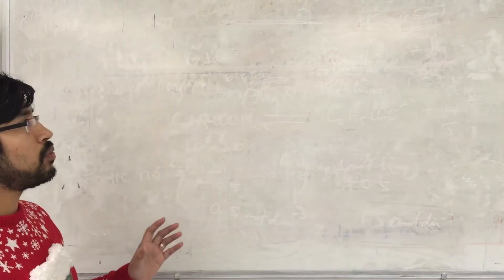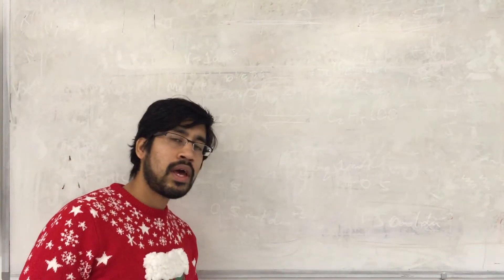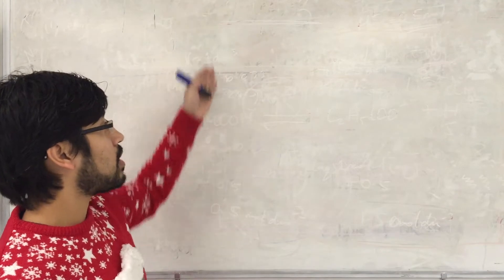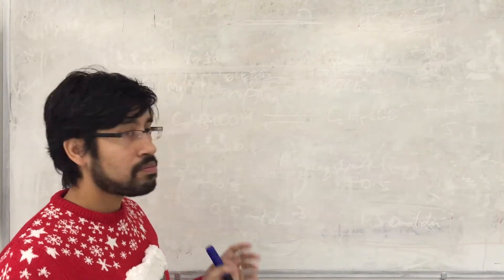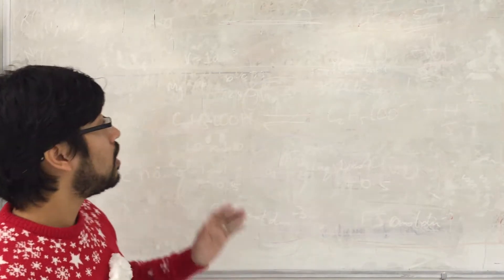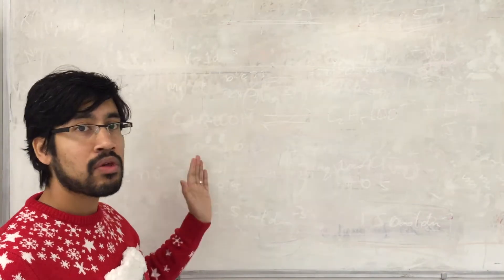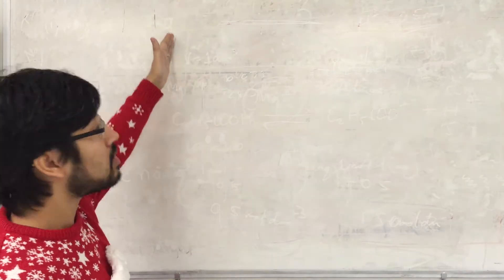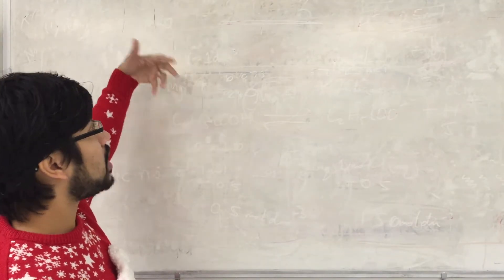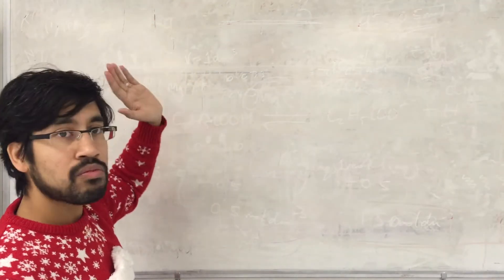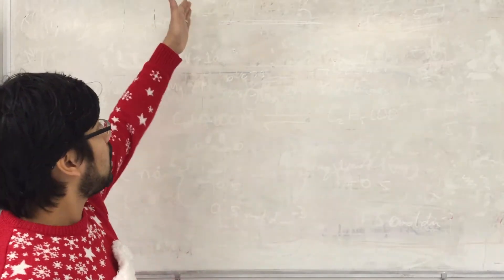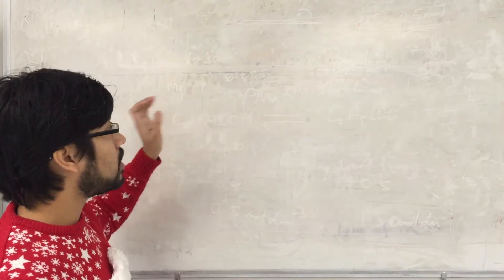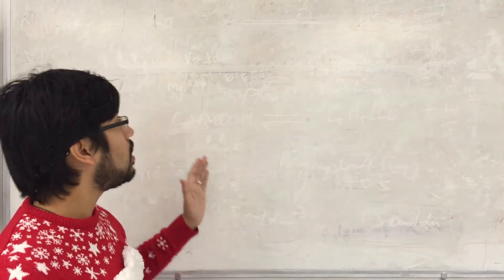Hi guys. We're going to continue our discussion of respiration. Where I left you last was we had generated pyruvate from the end of the glycolysis pathway. The whole point of the glycolytic pathway is to commit glucose to the breakdown process, to activate that molecule so it will take part in subsequent reactions, otherwise it's too stable, and ultimately to generate pyruvate.